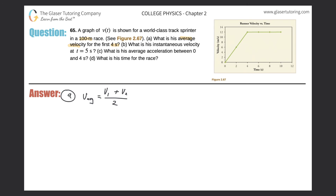The question is asking us the average velocity for the first four seconds, so what are the two points that correlate with the first four seconds? Let's take a look at the graph. We take the point at the start — the velocity there was zero meters per second. The second point should be at four seconds, and the velocity there looks to be about 12 meters per second.